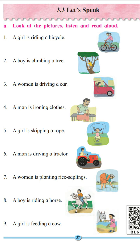Number 3. A woman is driving a car. What is the woman doing? She is driving a car. Which action is happening here? The action of driving. So the verb is driving.